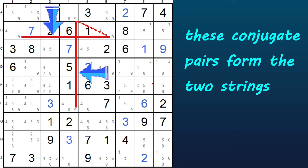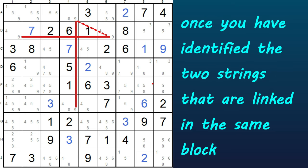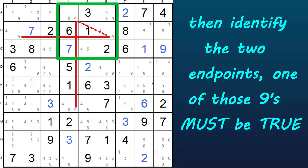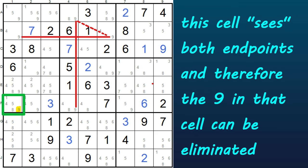These two pairs in the rows and columns are called the strings, and this pair here in block 2 forms the tail end of the kite shape. Once you've identified the two strings linked in the same block, you can look at the endpoints — those are these two 9s. Since one of those 9s has to be true, any cell that sees both those endpoints cannot be true; in this case, it cannot be a 9, so the 9 can be eliminated from that cell. This cell sees both endpoints: it's in the same row as this 9 and in the same column as this 9, and therefore this 9 can be eliminated.